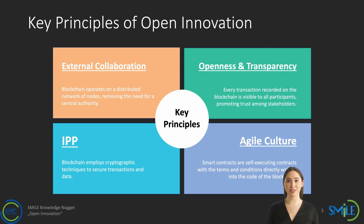Openness and Transparency: Open innovation promotes transparency in sharing ideas, insights, and data. By being open and transparent, organizations can foster trust and collaboration, creating a conducive environment for innovation. Intellectual Property Management: Effective management of intellectual property (IP) is crucial in open innovation. Organizations need to establish clear IP policies, agreements, and mechanisms to protect their own IP while ensuring fair and equitable sharing of IP with partners.